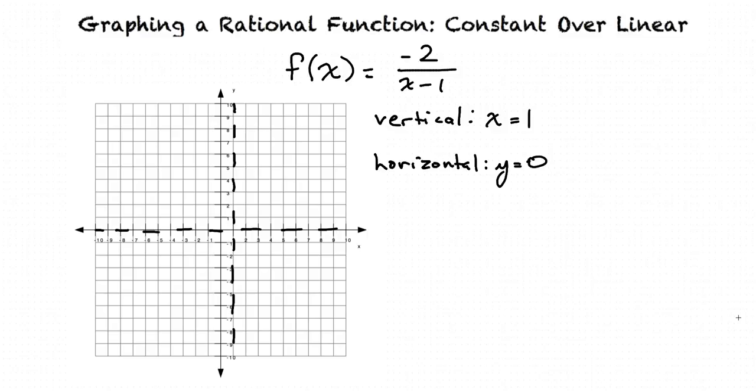Now that we've drawn our asymptotes, the next step is to plot a few points through which the curves pass. The points will give us a guide of where the graph lies in each section of the graph. Let's try some points on either side of the asymptotes. We'll start with points to the left of the vertical asymptote.